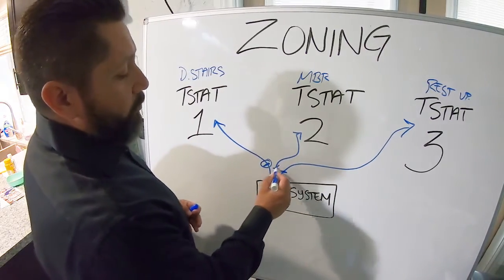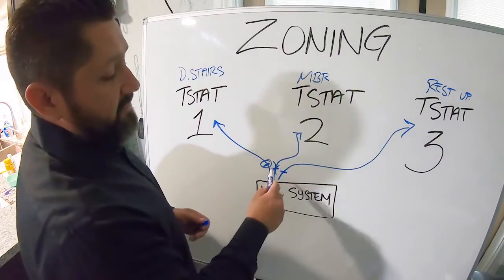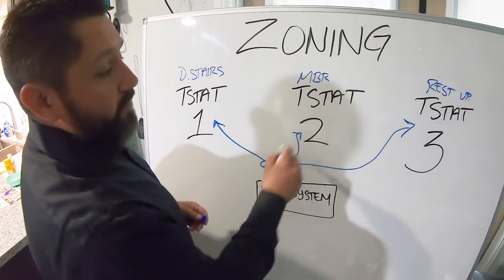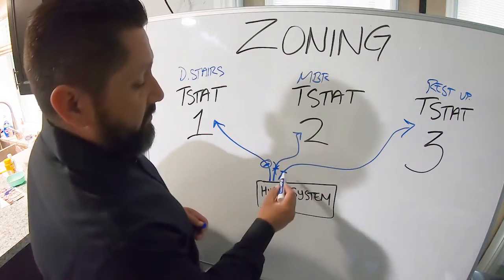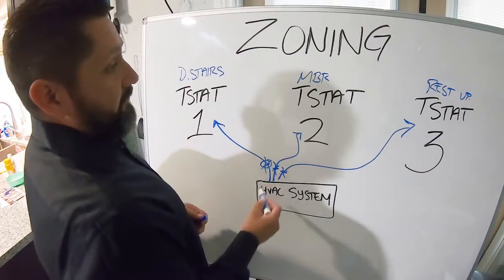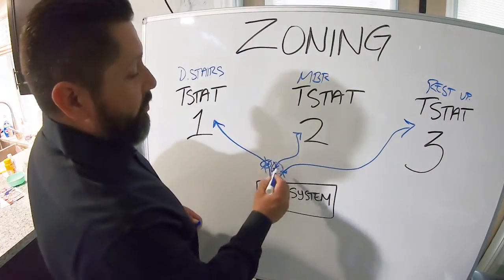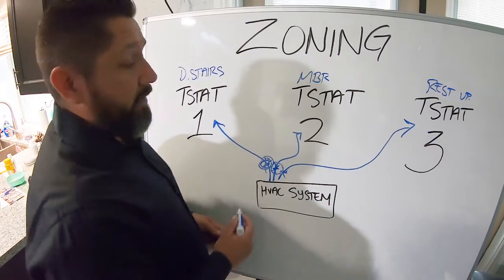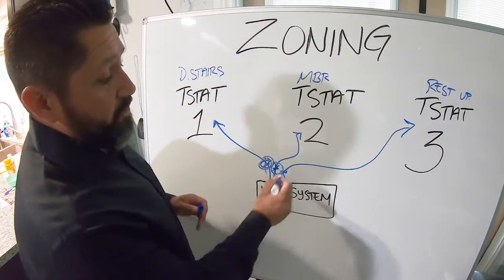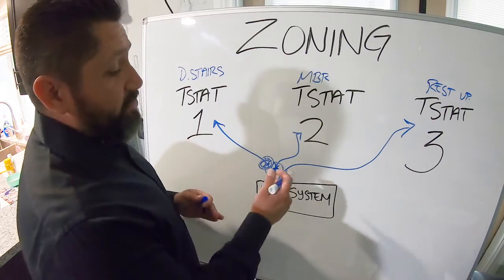So your thermostat in your master bedroom just has to tell it to open up. When only your master bedroom opens up, these guys will close off. Say if your master bedroom is on and your downstairs wants to be on, now both of these guys will turn on and they'll go ahead and blow out the air it needs to. And then your thermostat three will just shut off.